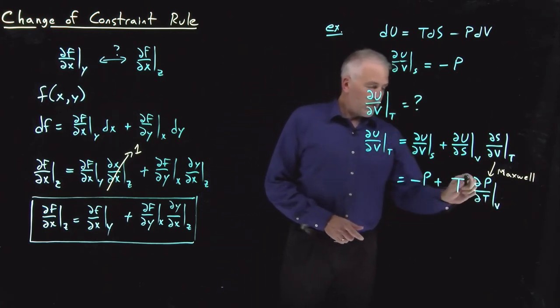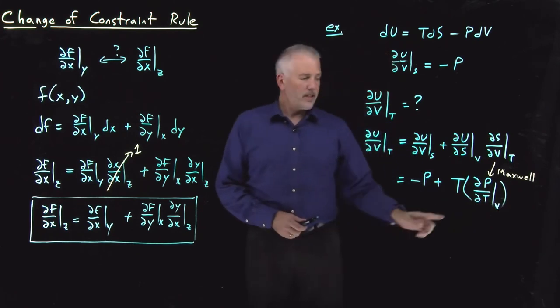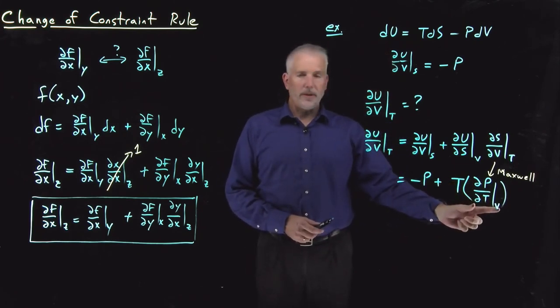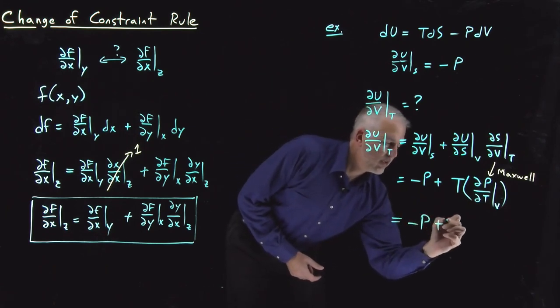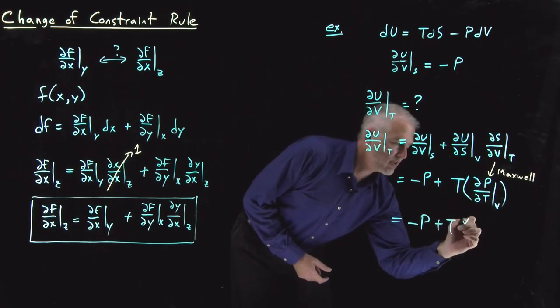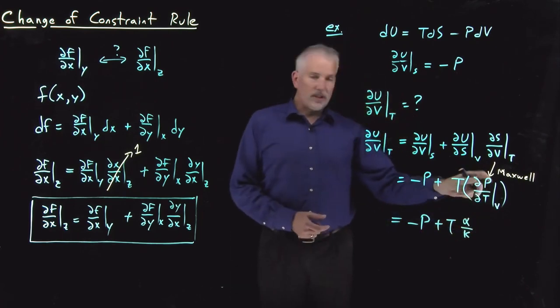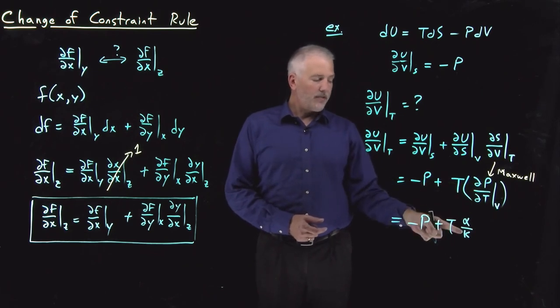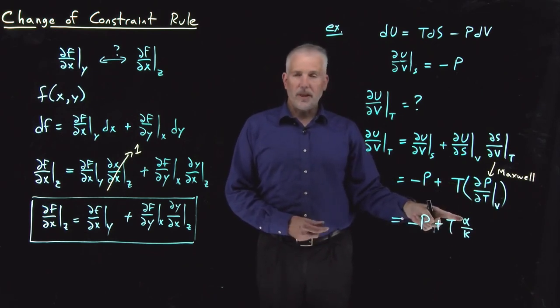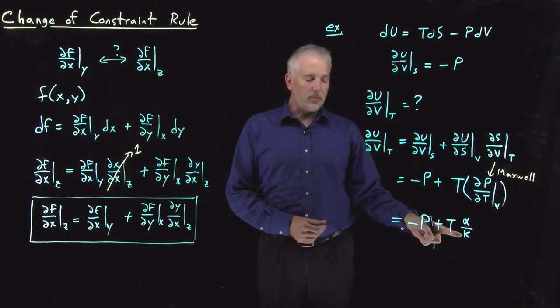And now ∂P/∂T at constant V, that's a derivative that we spent a fair amount of time analyzing when we discussed the cyclic rule, at which point we discovered that ∂P/∂T at constant V, that's related to two other cyclic permutations of those same variables, and that turned out to be α divided by κ, the thermal expansion coefficient divided by the isothermal compressibility.